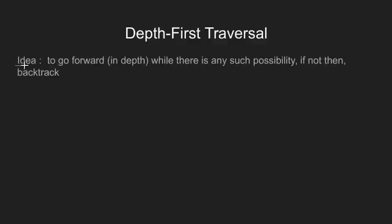The idea in depth first search is pretty simple. Given a graph we have to go forward depth wise while there is any such possibility. If not then we have to backtrack.